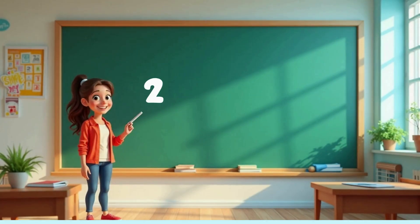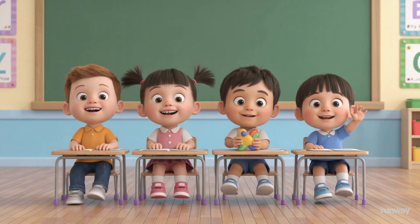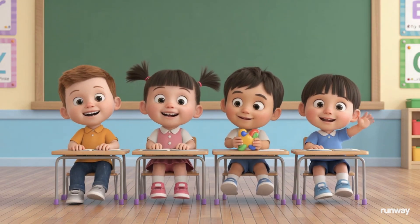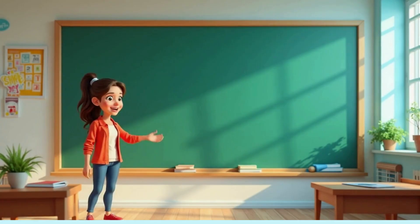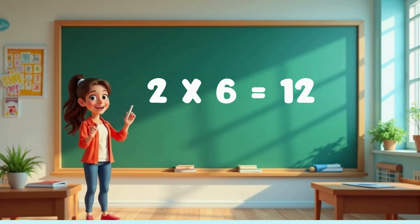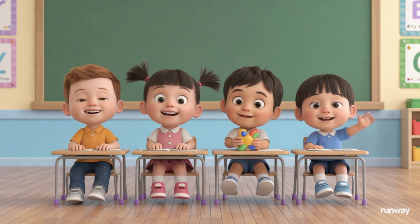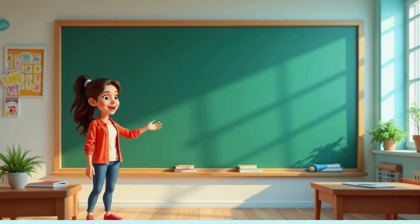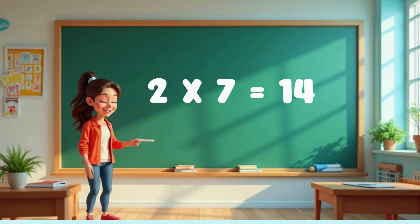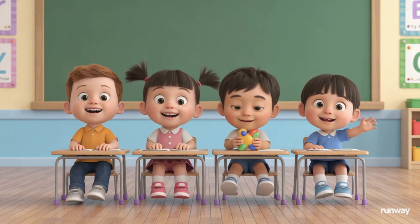Two fives are ten. Two fives are ten. Two sixes are twelve. Two sixes are twelve. Two sevens are fourteen. Two sevens are fourteen.